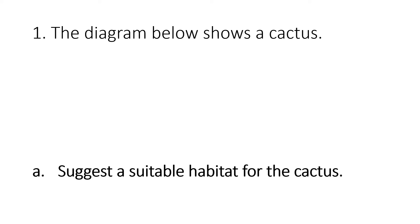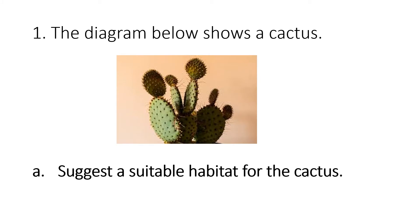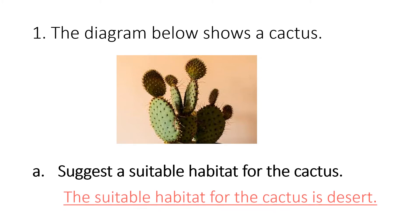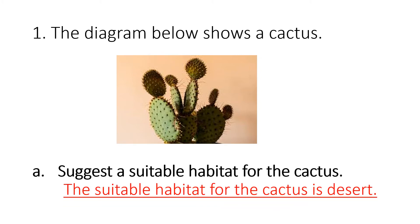Let's start the activity on page 17, number one. The question says: the diagram below shows a cactus. On letter A, suggest a suitable habitat for the cactus — that means what is the best habitat for the cactus. As we learned before, cactus lives in the desert, so the suitable habitat for the cactus is the desert.